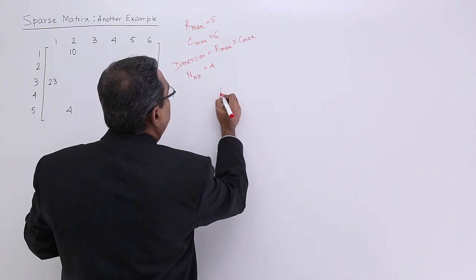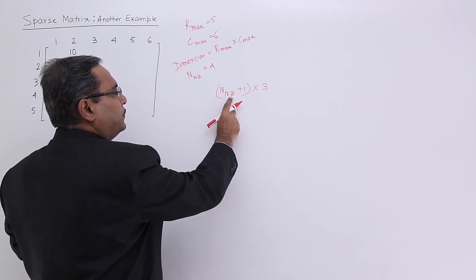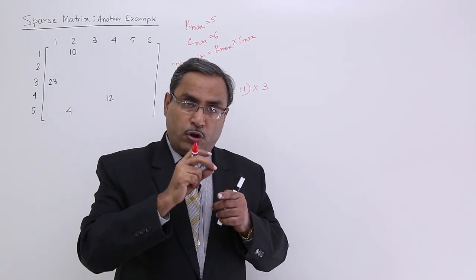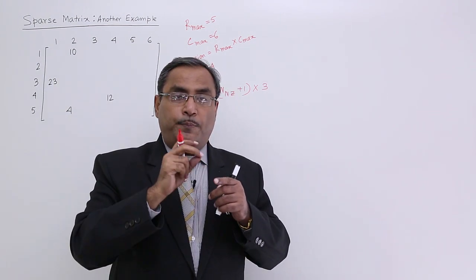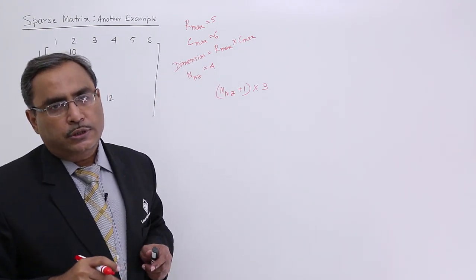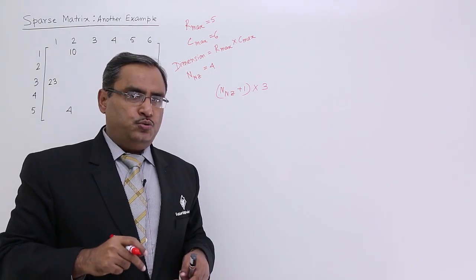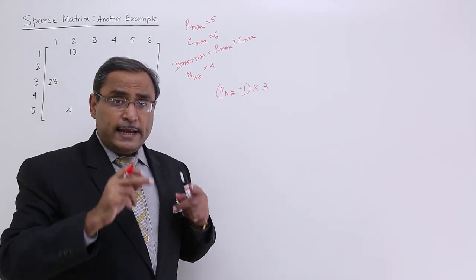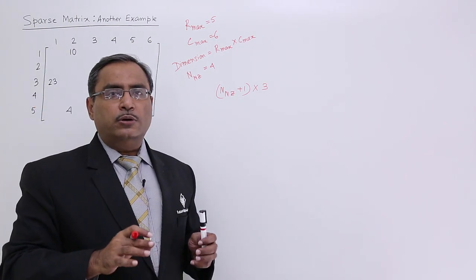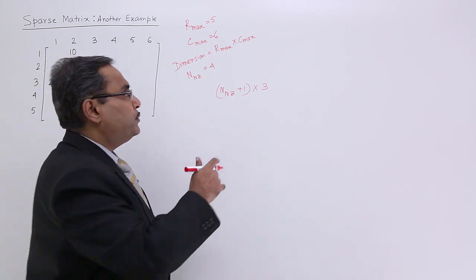The size of my proposed two-dimensional array will be like this. That is my nz, so that will be n of nz plus 1 whole into 3. That means, number of non-zero data plus 1, so that number of rows and 3 columns. This number of rows and 3 columns will be the size of my proposed two-dimensional array with the help of which this sparse matrix will be represented without missing any originality of data or information.